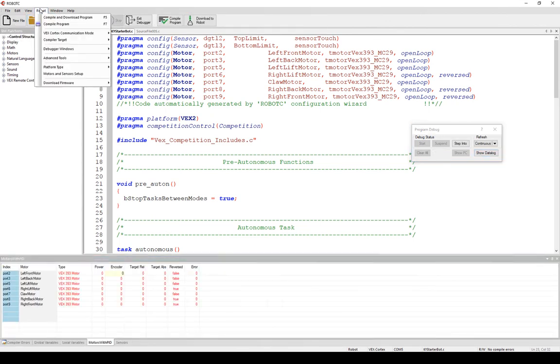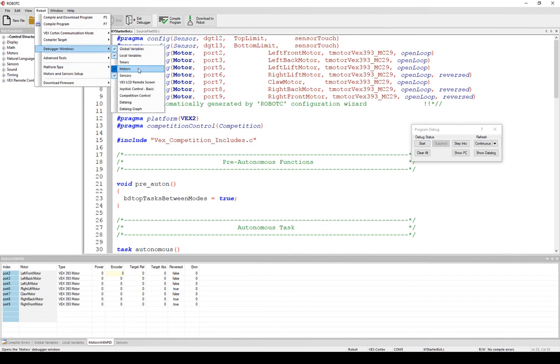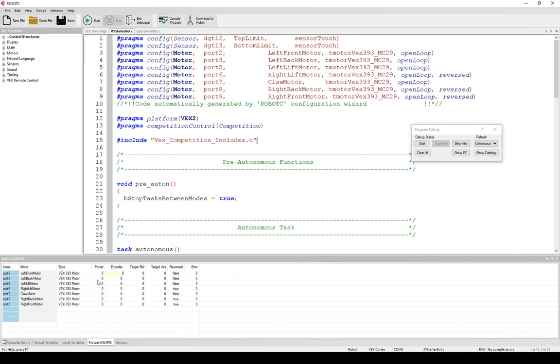You see I've got this debugger window that opens up in the robot debugger windows. What I can do is push start and stop. I have to push start for this to actually engage. I can type in 127 and it'll actually start the motor turning to 127, or I can set it to zero.